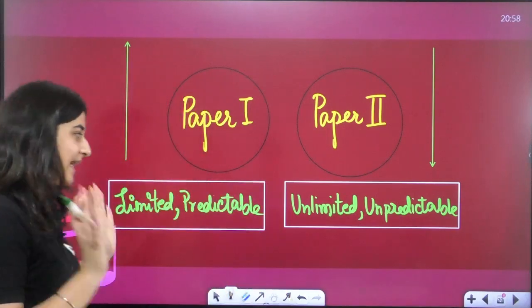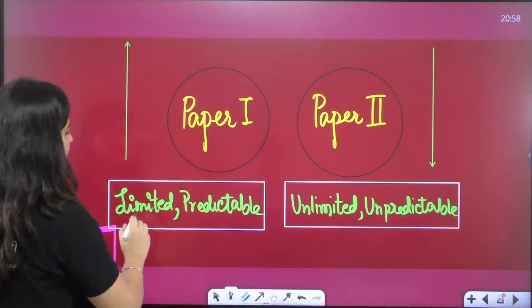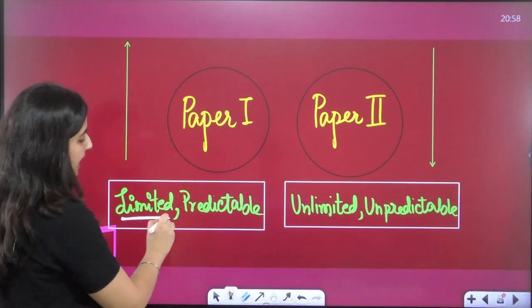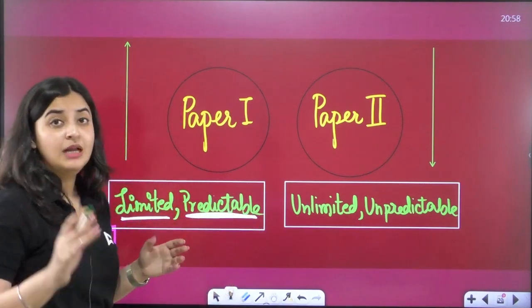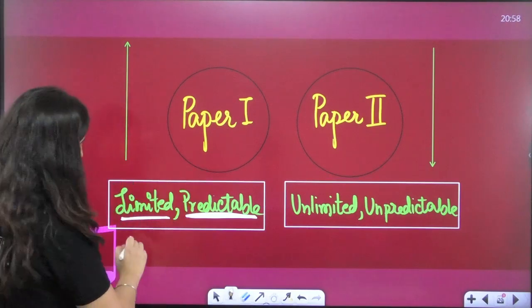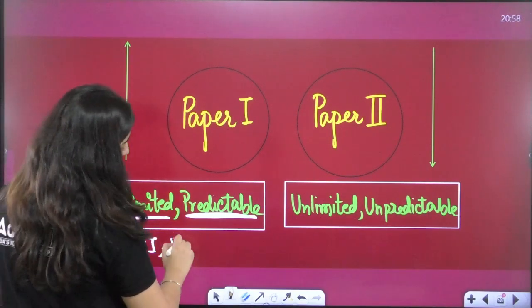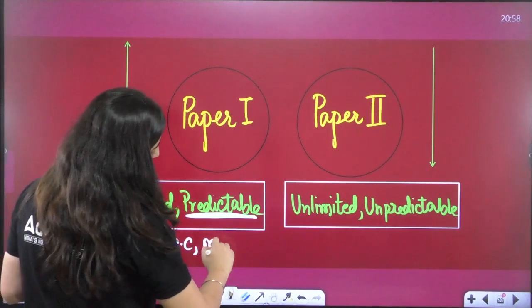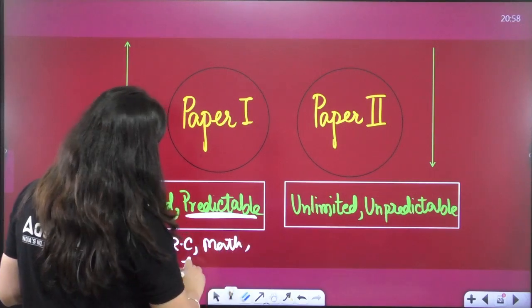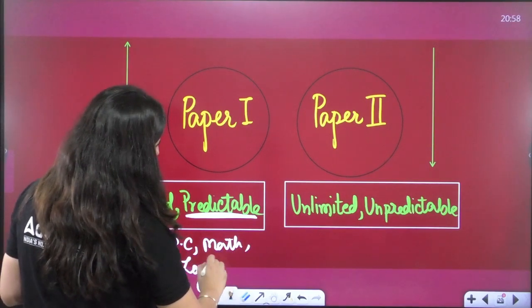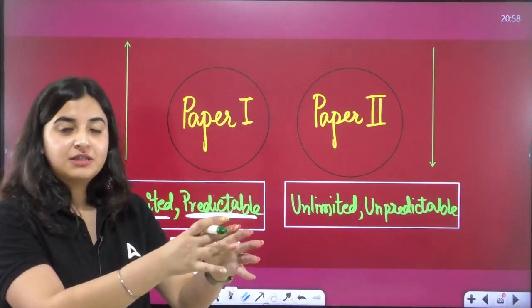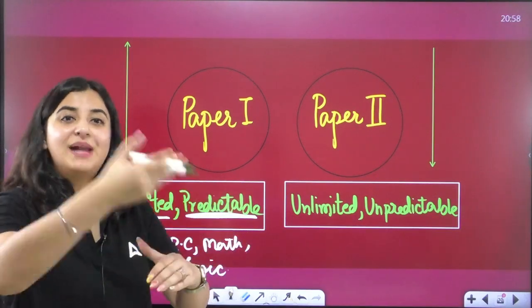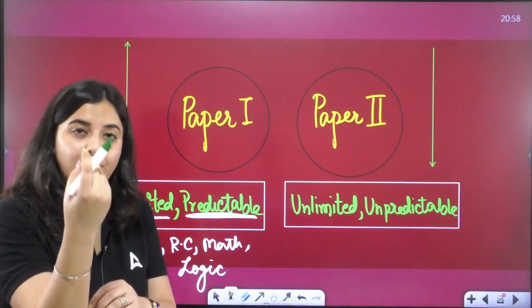For the reason, I will tell you, it is a very technical reason. The syllabus of paper 1 is also quite limited. And the nature of questions is also quite predictable. Plus, there are some units in it, such as data interpretation, reading comprehension, math, logic. This is a portion of your own, where you don't need to be prepared. Here, you will practice it before, and then you will perform it on spot.